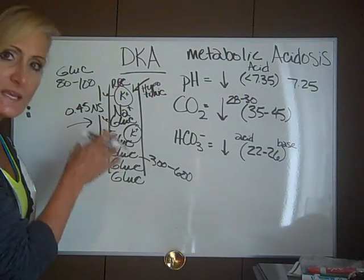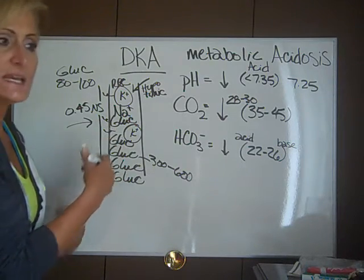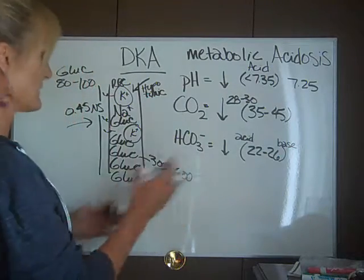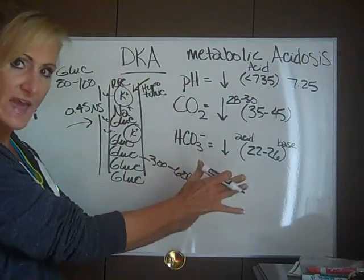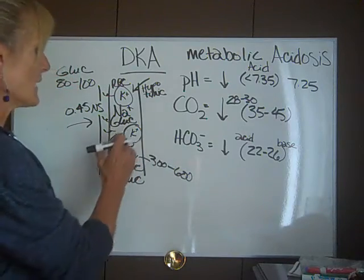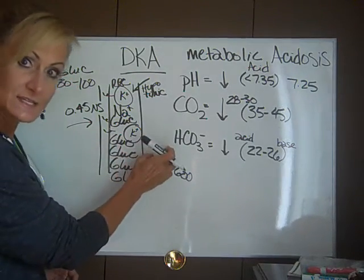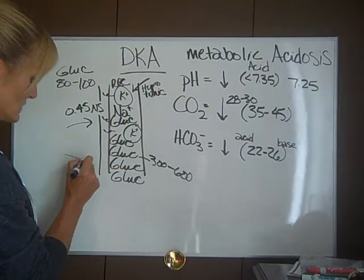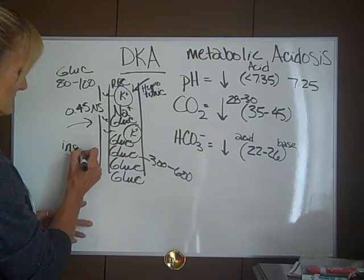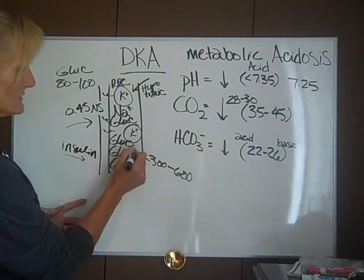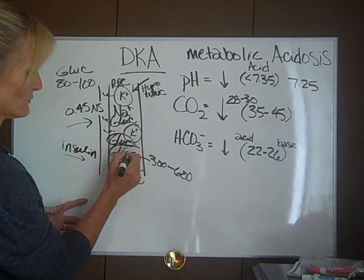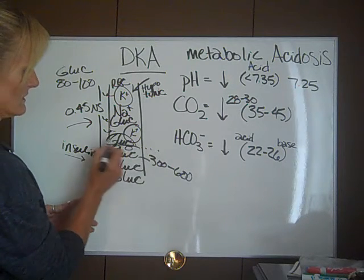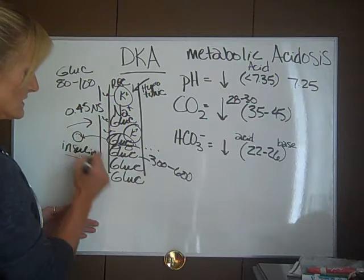We have all of this glucose in the intravascular spaces — it needs to get into the cells. It does us no good just hanging out in the intravascular spaces; the cells need that for energy. So how do we get glucose into the cells? We give insulin. We're going to give this person insulin, and what does insulin do for us? It's a transporter — it's going to transport the glucose into the cells.